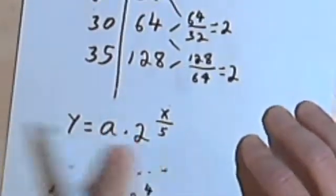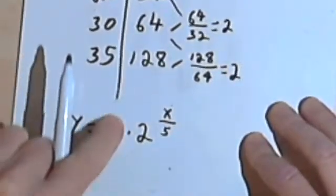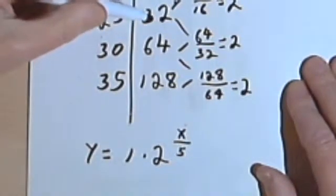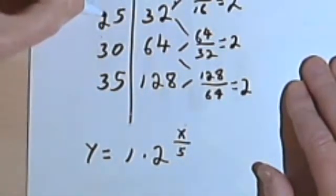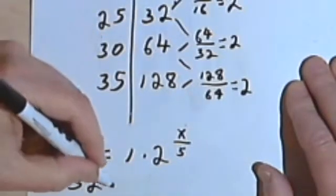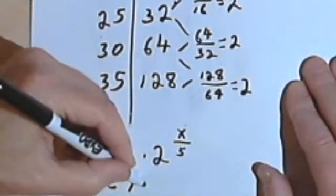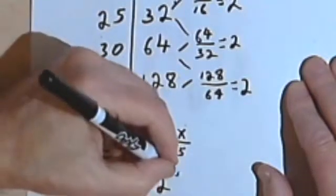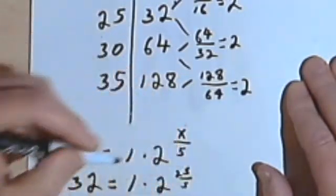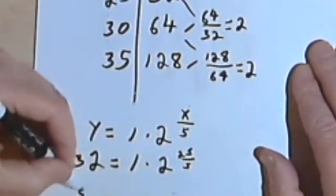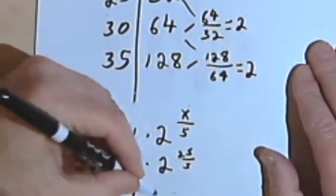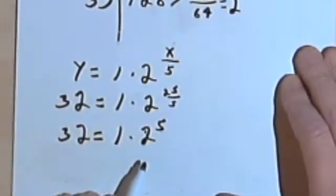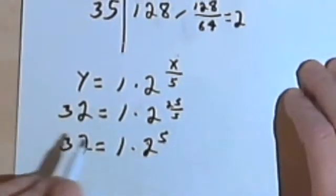Let's check that out and make sure. So if a is 1, I'll put the 1 in there just to be safe. When y is 32, I've got this pair 25 and 32. When y is 32, I should have 1 times 2 to the... x is 25... 25 over 5. 25 over 5 is 5. 32 equals 1 times 2 to the 5th. 2 to the 5th is 32. 1 times 32 is 32. So this works out fine.